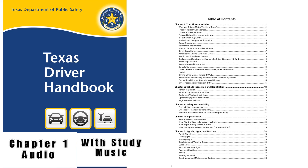DPS may require supporting documentation or conduct an investigation to confirm the information provided on the application. DPS will issue a hardship license if it is determined that: 1. Failure to issue the hardship license will result in an unusual economic hardship for the family of the minor applicant. 2. The hardship license is necessary due to an illness, disability, or death of a family member. 3. The hardship license is necessary because the minor applicant is enrolled in a vocational education program that requires a license for participation. 4. A court order requiring issuance of the hardship license is presented.